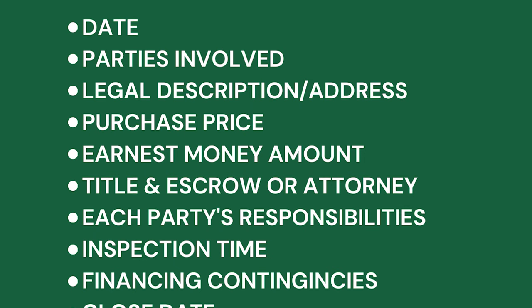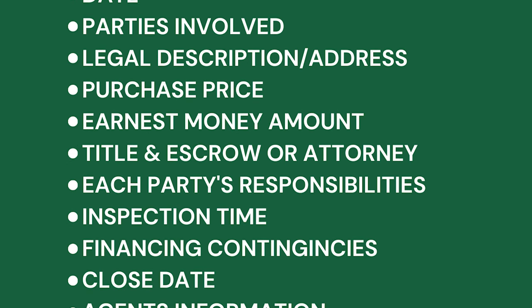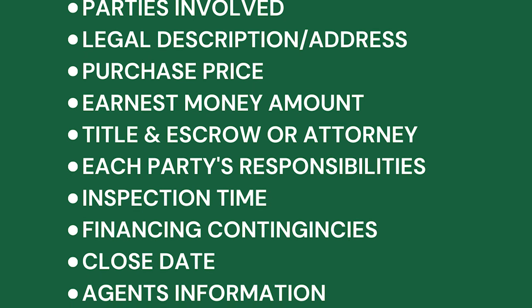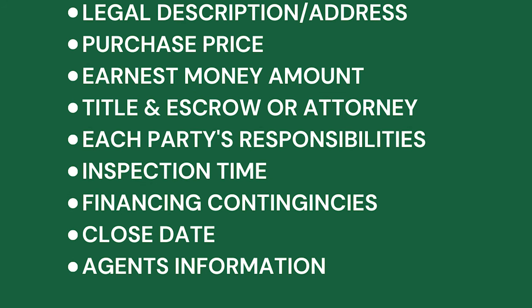Again, this document will typically spell out the date the agreement was made, who the parties of the contract are, the legal description or address of the property, the purchase price, earnest money amount, title and escrow company or closing attorney handling the conveyance, each party's responsibilities, the inspection time, financing contingencies, and the close date. It'll also have sections outlining the real estate agent's information and brokerage, and it'll state what agent is representing who in the transaction. I've done a video on agency relationships in the past, so check that out for clarity. Also, most realtor-provided residential real estate contracts have language regarding assignability, so make sure you read it to find out if the contract is or isn't assignable.